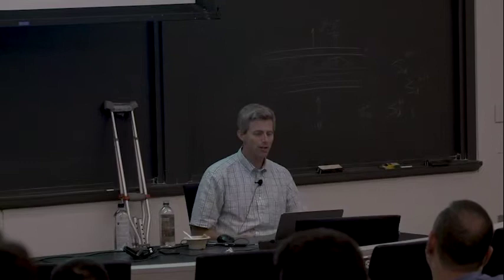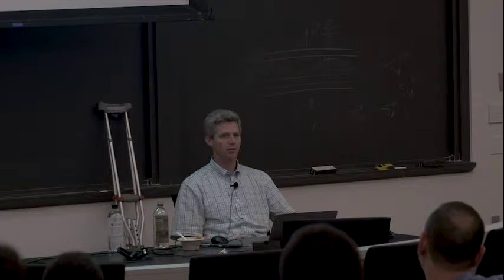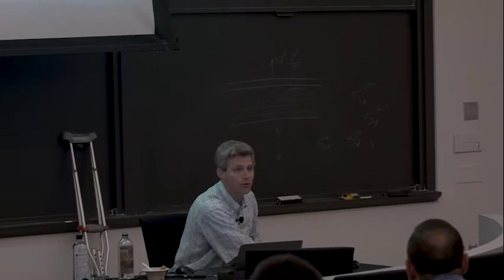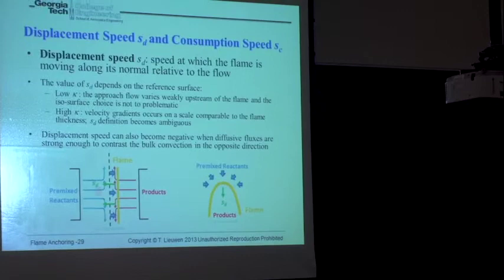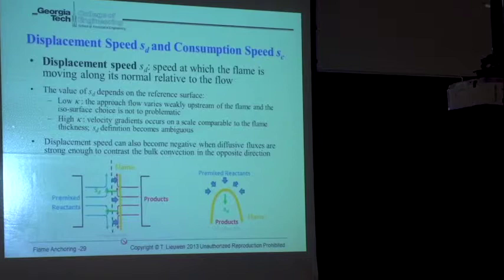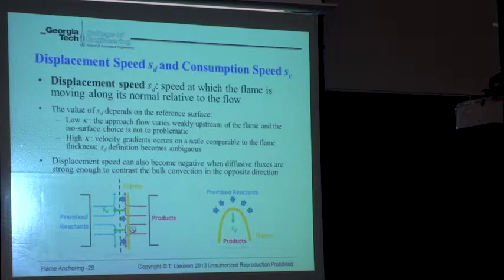What makes life interesting is that displacement speed can actually become negative. If you take premixed reactants and stagnate them against products, for a low stretch rate the flame sits on the reactants side. But if you stretch the flame strongly enough, it can pop across the stagnation line to the other side, where the flow is going backwards through the flame — the flame is fed entirely by diffusion of reactants fighting the products. In that case, the displacement speed is negative.